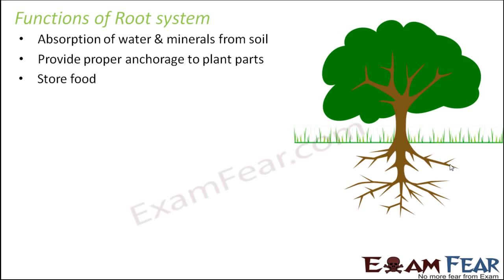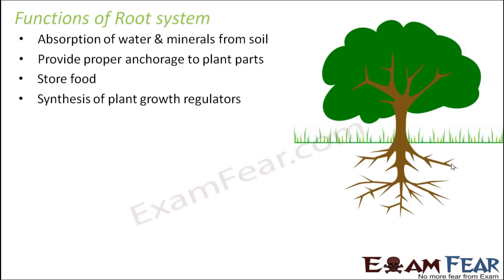Roots also help in storing food. In many plants, roots get modified into different types of structures for food storage. Not everywhere do roots look the same — in many cases they get modified into different shapes and forms. Roots also help in the synthesis of plant growth regulators, since plants need certain enzymes and hormones for their growth. So the basic functions are: absorption of water and minerals, providing proper anchorage, food storage, and production of plant hormones.